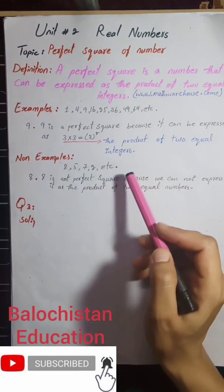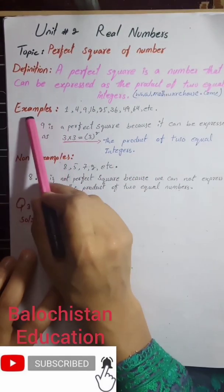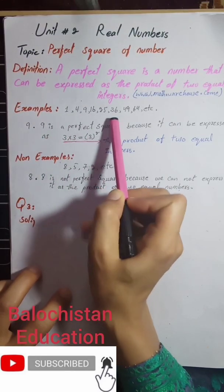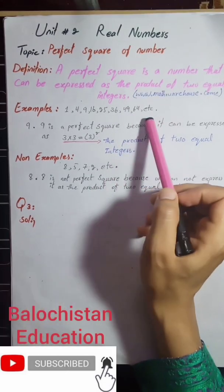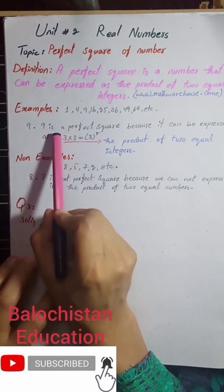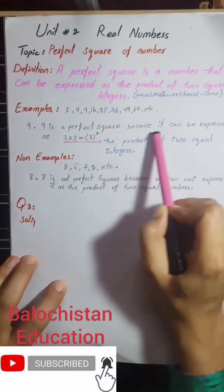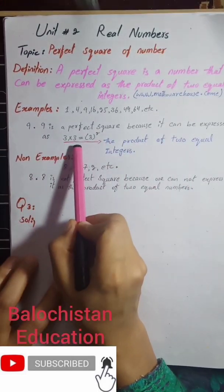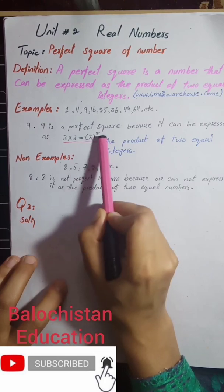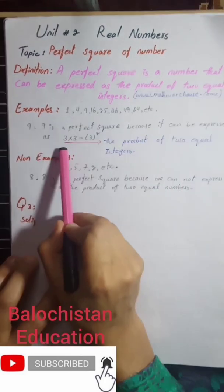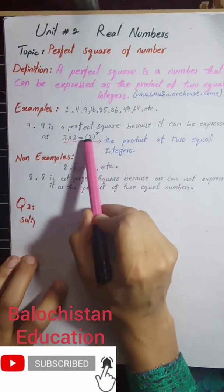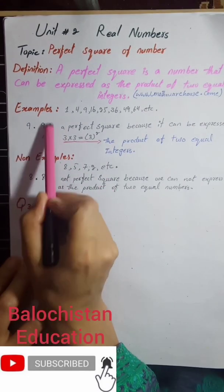Let's see how it works. We have 1, 4, 9, 16, 25, 36, 49, and many more numbers which are examples of perfect squares. For example, 9 is a perfect square because it can be expressed as three multiplied by three — two equal numbers. Three and three are both equal, and three multiplied by three is known as the square of three. The product of two equal integers: three is an integer, and this multiplication is known as the square of three.